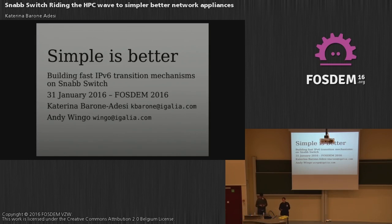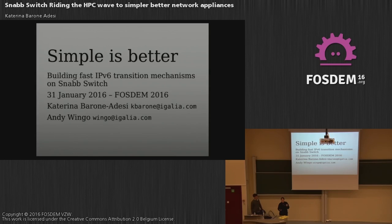In this talk, we're going to present a few different things: what Snapswitch is — it's somewhat like DPDK — what we've done on top of it, which is an IPv6 transition mechanism, basically part of LightWave 4over6, and some things we've done to optimize that. It's user-space networking in a high-level language, and we're getting near line speed on two 10G interfaces with one core.